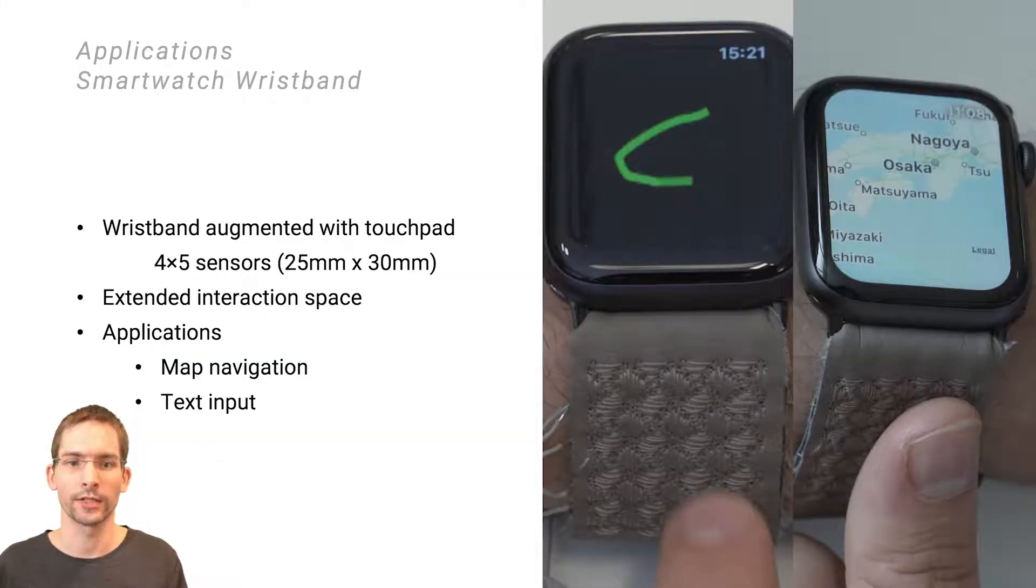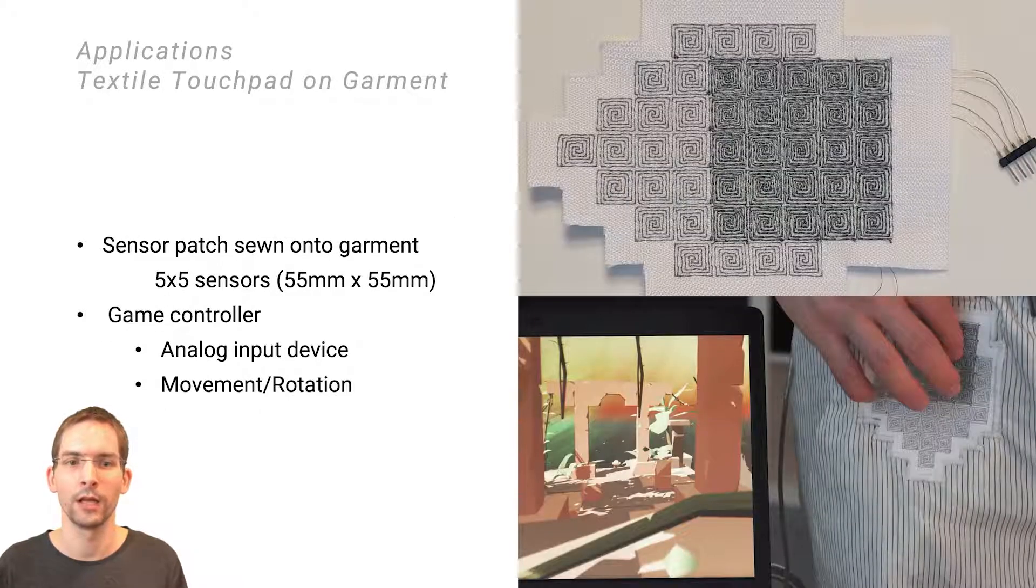To demonstrate our sensing matrix for continuous three degree of freedom input, we implemented a wristband prototype for a smartwatch. We used this extended interaction space for a basic text input application and a basic map application where panning is achieved by rolling the thumb on the sensor patch and pressure information is used to control the zoom.